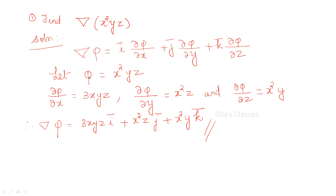Differentiating x²yz: always remember in partial differentiation, if you are differentiating with respect to one variable, treat all other variables as constants. Differentiating with respect to x gives 2xyz. With respect to y gives x²z. With respect to z gives x²y. So del phi = 2xyz i + x²z j + x²y k.